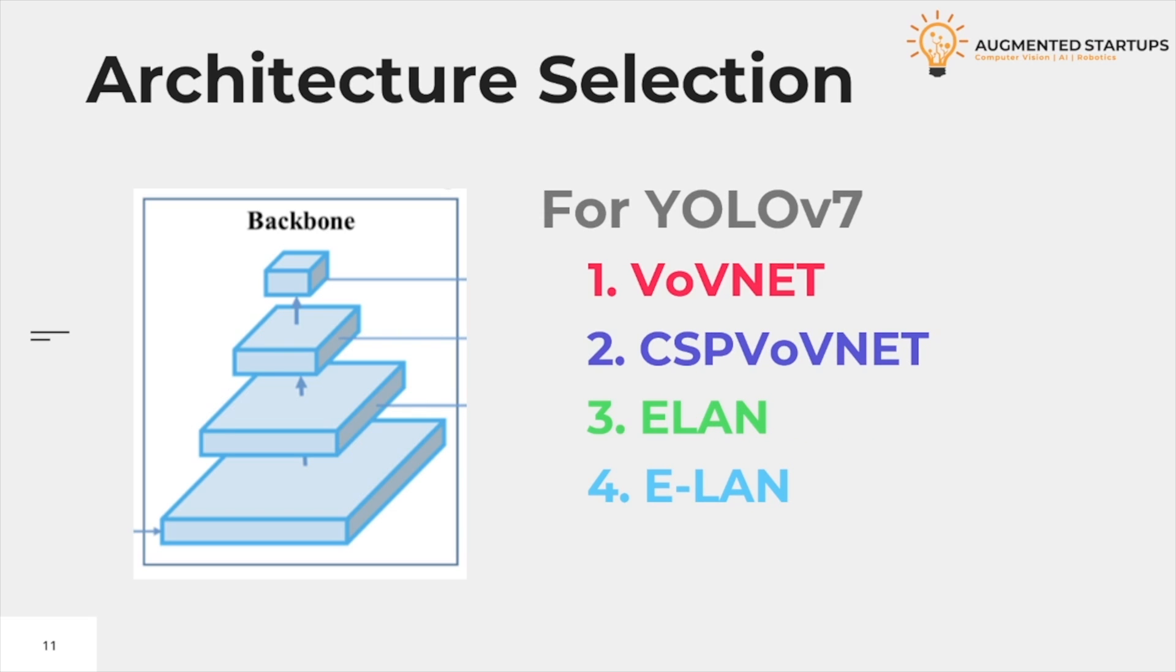For YOLOv7, the paper used the following pre-trained weights: VoVNet, CSPVoVNet, ELAN, and E-ELAN. We will learn more about why these weights are used during the study later in the video.